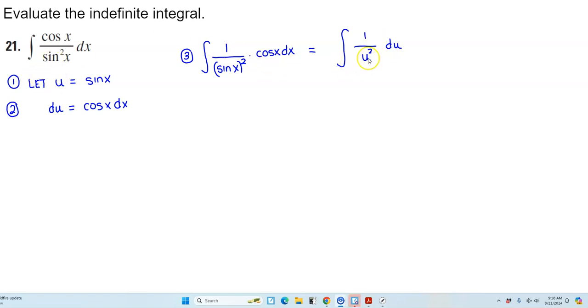Okay, so now we want to find the antiderivative. Before we do, we need to simplify that 1 over u squared to be u to the negative 2 power du.